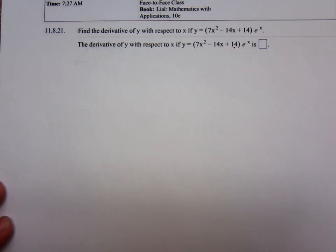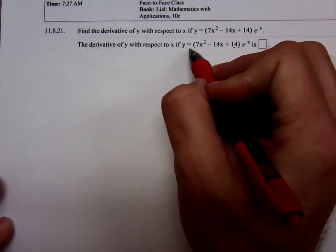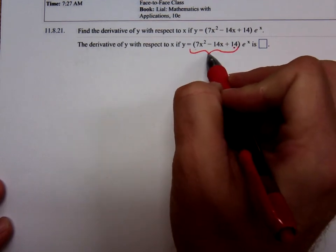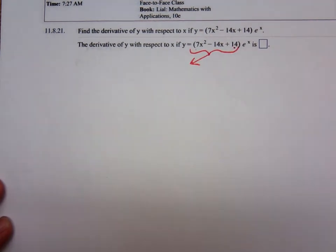So we're going to have to use the product rule. That means we need to know the derivative of each individual factor. Let's first differentiate 7x squared minus 14x plus 14.